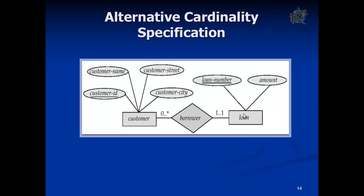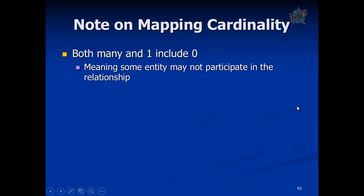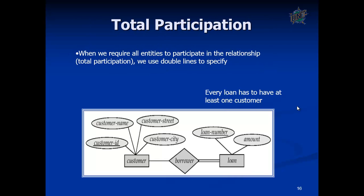Alternative cardinality specification means you can specify cardinality by a particular representation method — like zero-to-many and one-to-one. Total participation: when we require an entity to participate in a relation, we use double lines to specify that particular entity. For example, every loan must have at least one customer, so there is total participation — double lines are used to specify the total participation of a particular entity in a relationship.